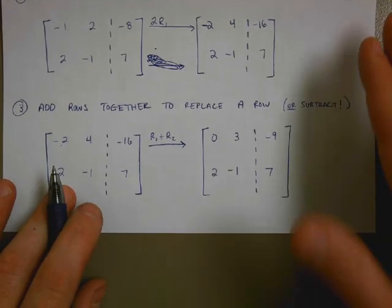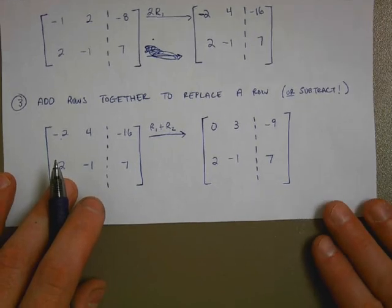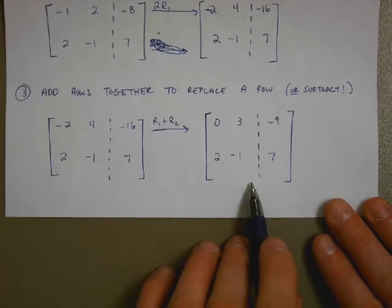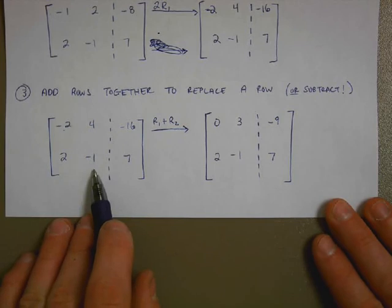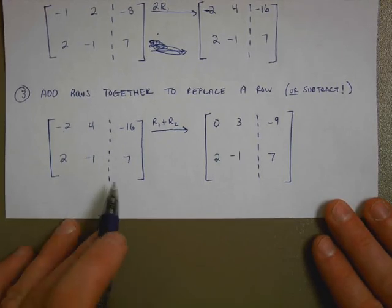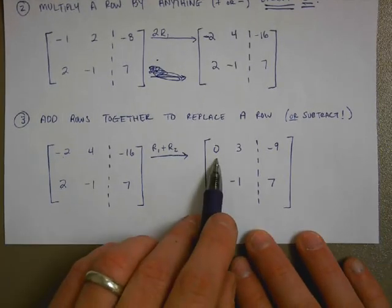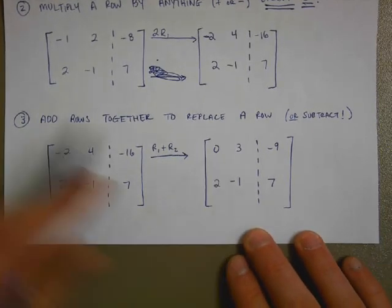And what we're saying then, according to the third rule of matrices and how you can manipulate them, this matrix on the right and this matrix on the left are exactly the same thing. Now, why this helps us is because you can see what I've done is I've made one of these a 0. And in the process, what I've basically done is this.